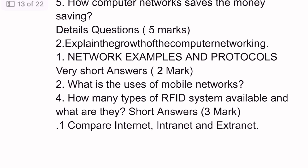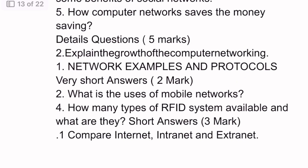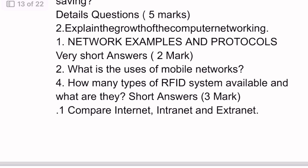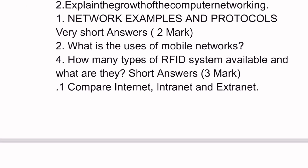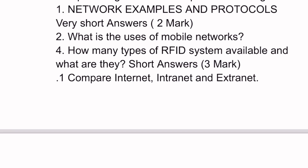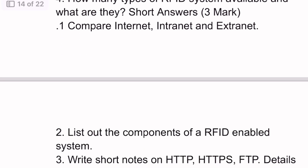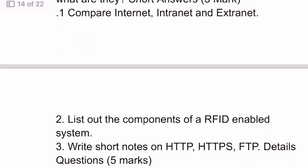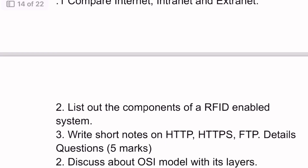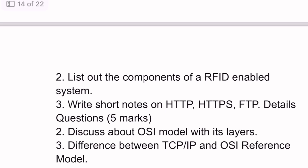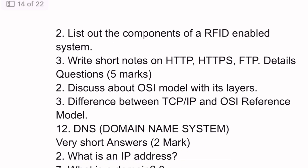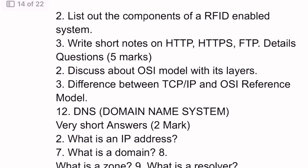Next unit: Two mark questions — 2nd and 4th questions on users of mobile network and types of RFID systems available. Short answer three mark questions: 1st question — compare internet, intranet, and extranet. 2nd question — components of an RFID-enabled system.